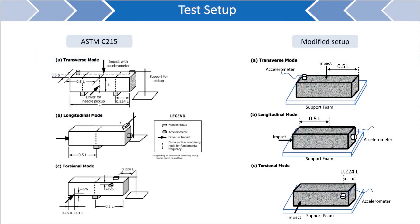ASTM C215 describes the test setup used to excite the fundamental transverse, longitudinal, and torsional resonant modes. That setup includes the necessary impact locations needed to excite the desired mode, and driver and pickup locations if the forced resonance frequency technique is used. In this testing, a hammer is used to excite the specimen, so we will only focus on the hammer impact and accelerometer locations.